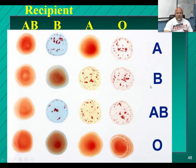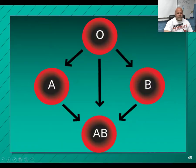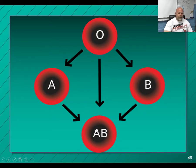The way the system works is like this: type O is the universal donor and type AB is the universal recipient. O can donate to A, B, or AB. A can only donate to A or AB. B can only donate to B or AB. And AB can only donate to AB.